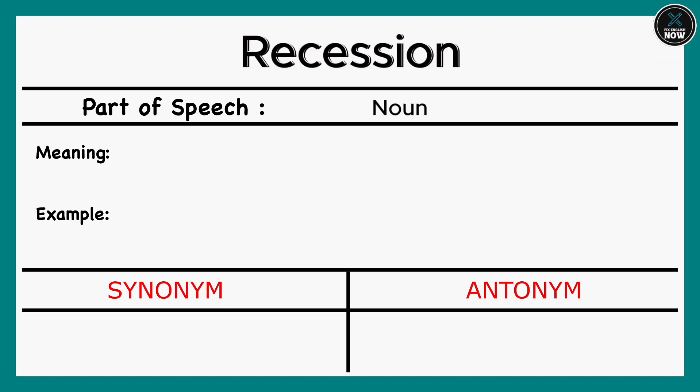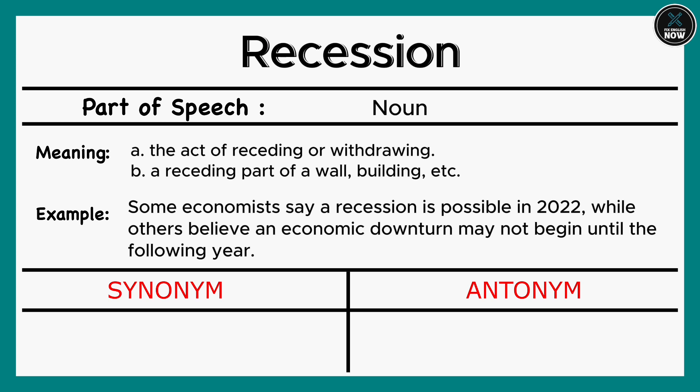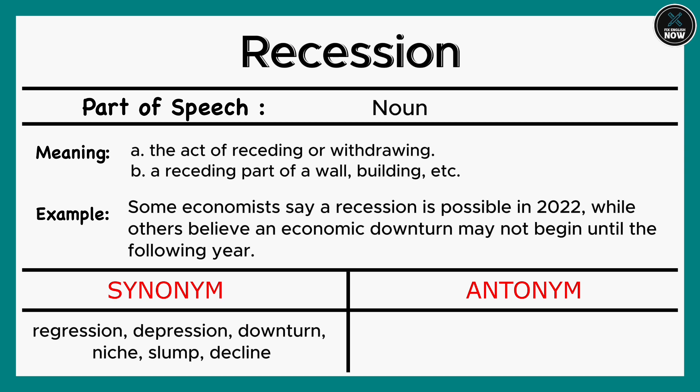Recession: A. The act of receding or withdrawing. B. A receding part of a wall, building, etc. Example: Some economists say a recession is possible in 2022, while others believe an economic downturn may not begin until the following year. Synonyms: Downturn, Niche, Slump, Decline. Antonyms: Inflation, Growth, Boom, Progress, Advance.